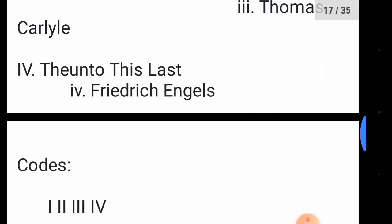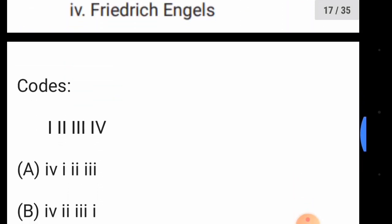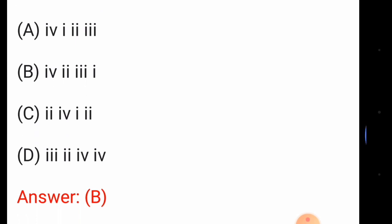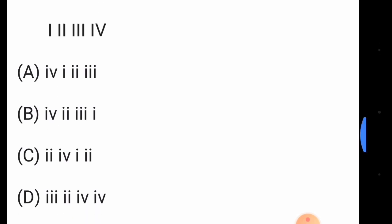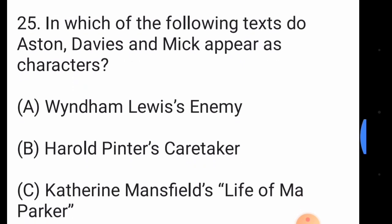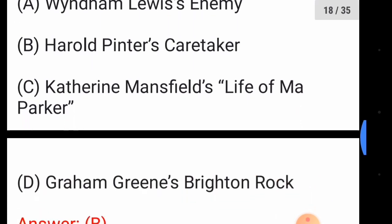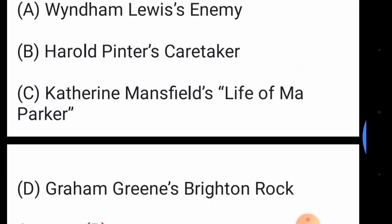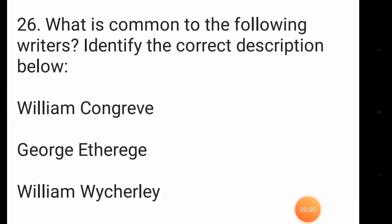Question number twenty-five: match the following pairs of books and authors. The correct answer is option number B. In which of the following texts do Aston, Davies, and Mick appear as characters? The answer is option number B, Harold Pinter's 'The Caretaker'.